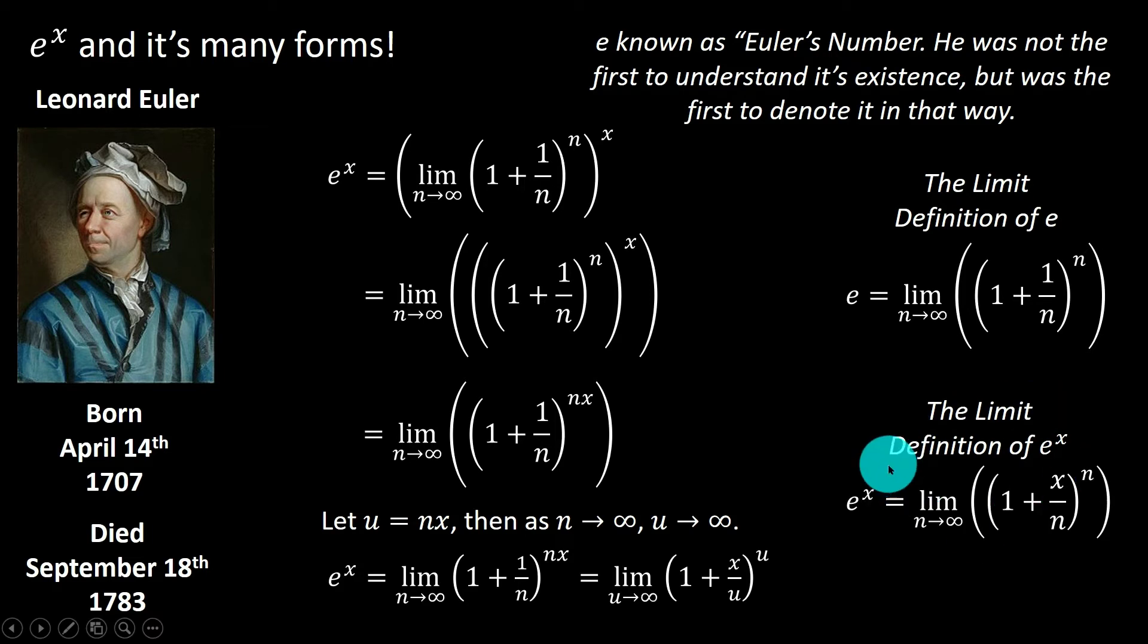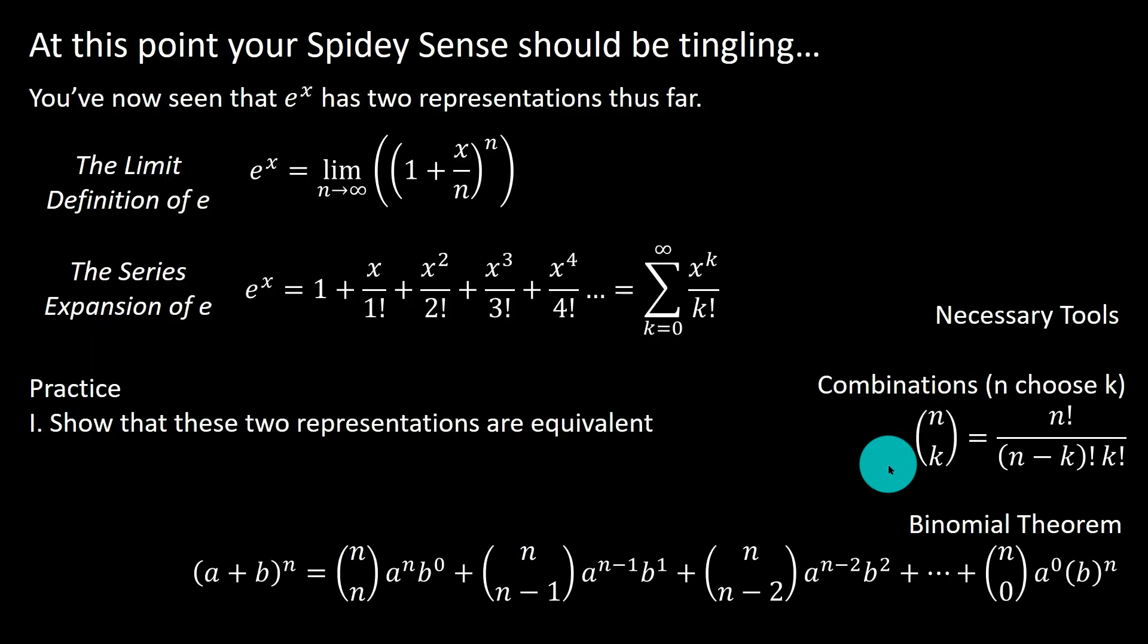So we now have a representation for e to the x using a limit definition. But we just showed in the previous clip that there was a series expansion for e to the x. So how is that possible that we have these two very different definitions for e to the x? So we have to be asking ourselves, is this limit definition equivalent to the series expansion definition? And that's actually your first practice for this video. Can we show that these are actually equivalent?